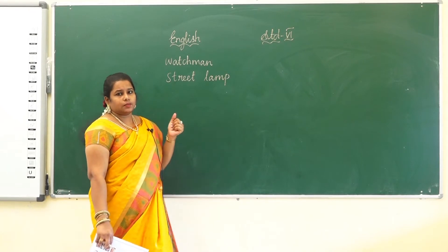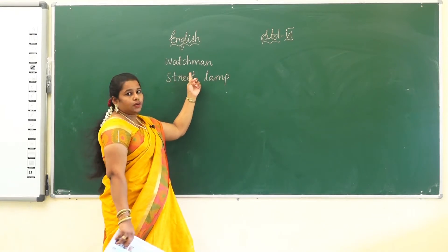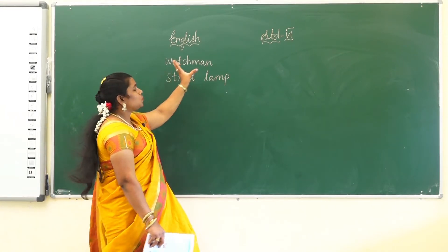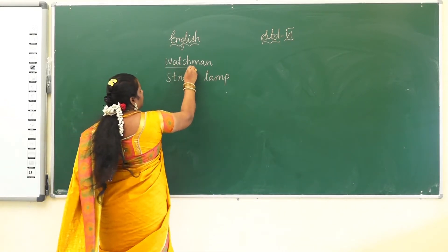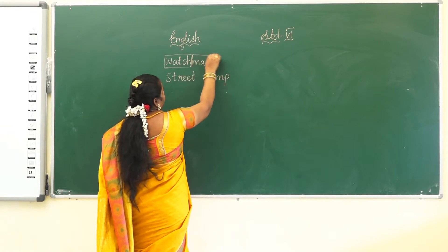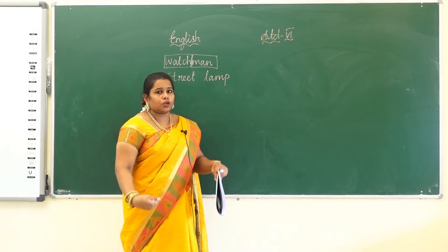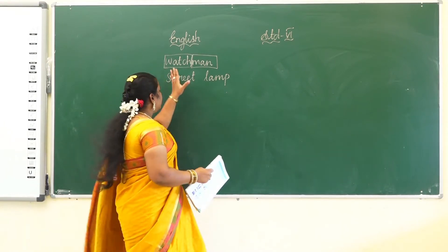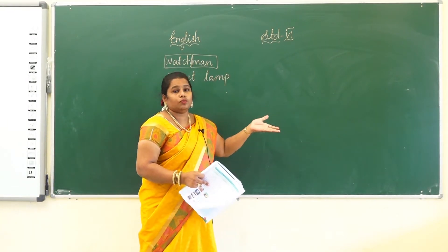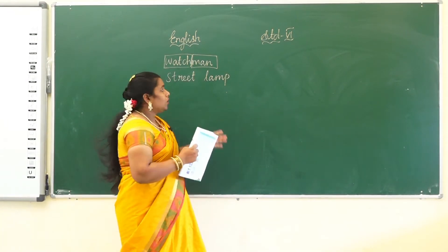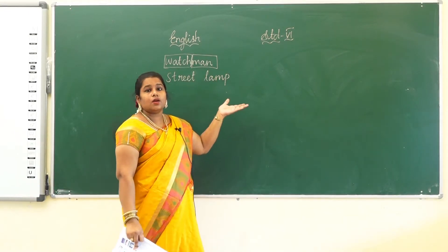What is the difference here? Here it is one word, but there are two words. Watch is one word and man is one word. Watch means we can wear a watch. Man means a human. So these two things join and form a new word. Watch plus man is formed as watchman.